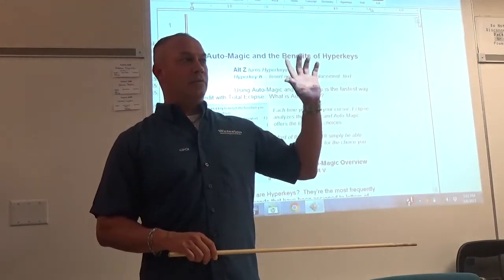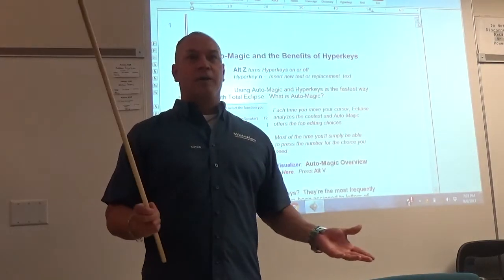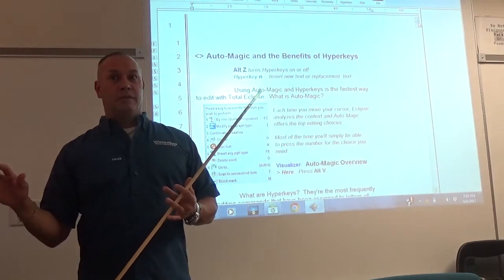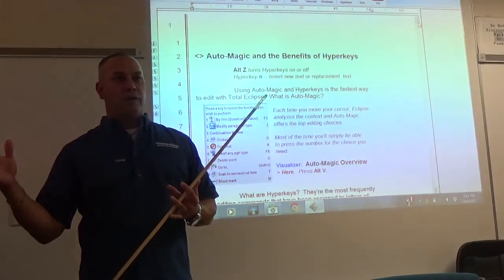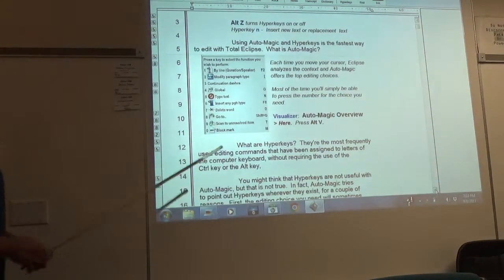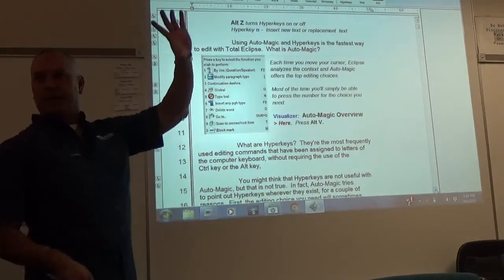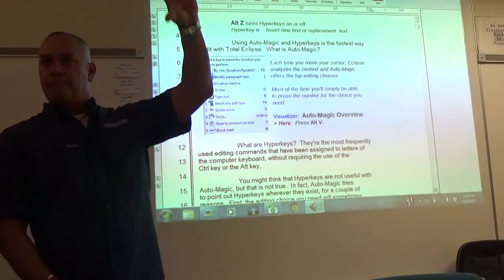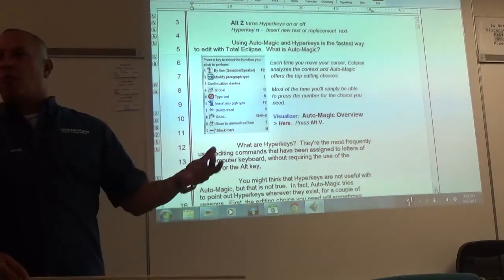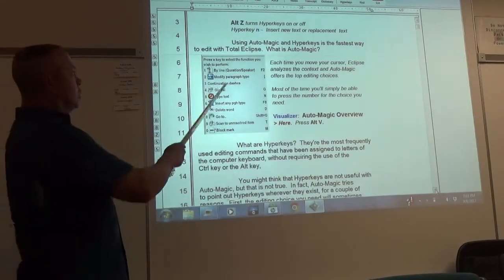So now you're going to be able to delete, shave, cap, mark, find, delete — all different kinds — search for and untranslate, all through letters on the keyboard. So it takes on a different function, not a letter. Each time you move the cursor, Eclipse analyzes the context of the auto magic and offers you the top editing choices. That's what I was telling you about having the info — the information bar gives you information on what you do. If you're on a word, it's going to give you the options of that word.